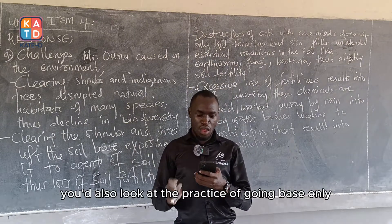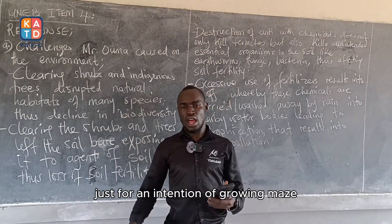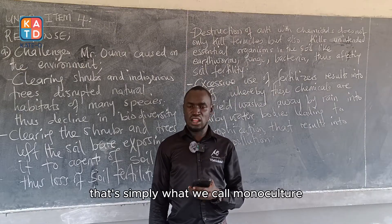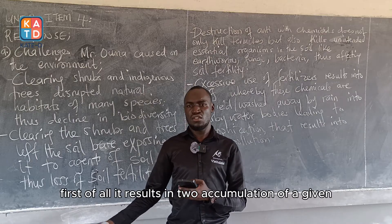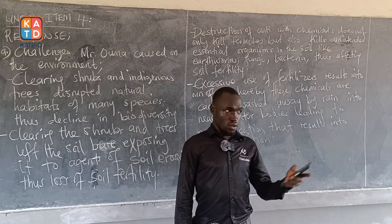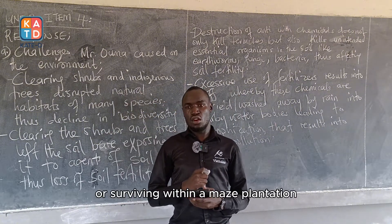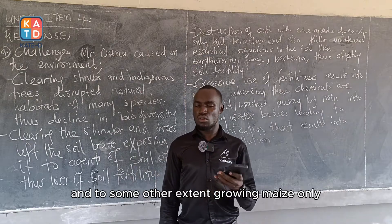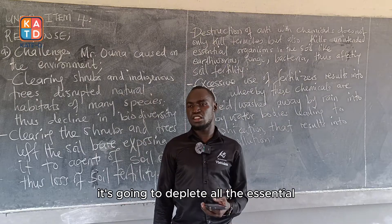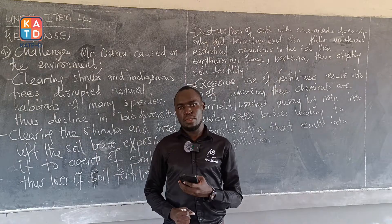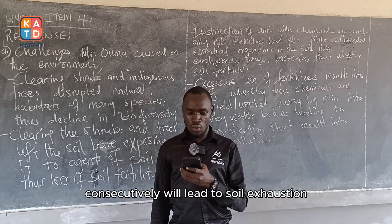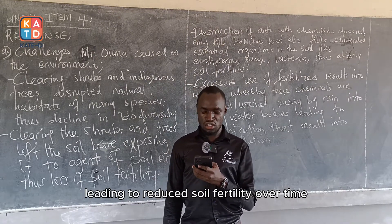Another challenge: the practice of growing maize only — clearing forests and shrubs just to grow maize on a large scale across seasons — is what we call monoculture. Monoculture has disadvantages: first, it results in accumulation of specific pests that thrive in a maize plantation. Additionally, growing only maize consecutively on the same piece of land leads to soil exhaustion, whereby specific nutrients required by maize plants are depleted from the soil, leading to reduced soil fertility over time.